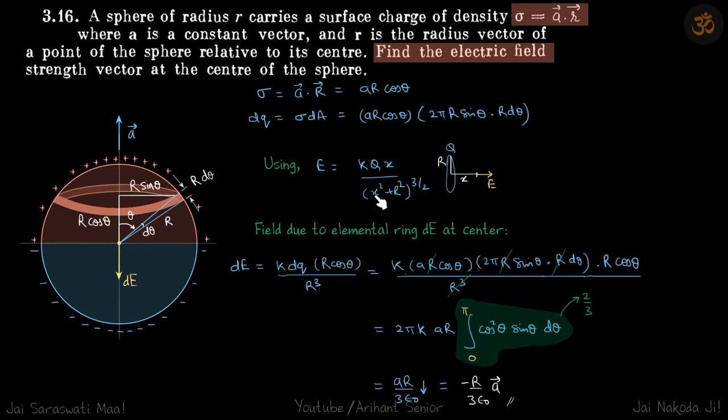So here x² will be r² cos² θ and here the radius² will be (r sin θ)². So (r cos θ)² + (r sin θ)² will give us r³. And numerator we have k into dq into x which is r cos θ, so this distance is r cos θ. So we put the value of dq here from this and after some simplification we will get it as 2πkar cos² θ sin θ dθ.